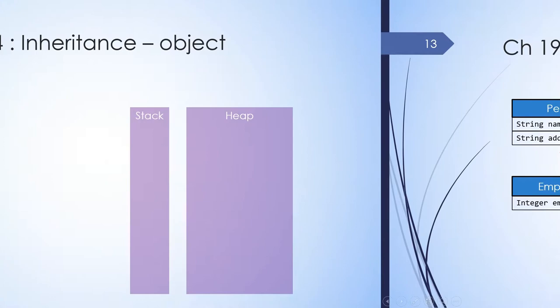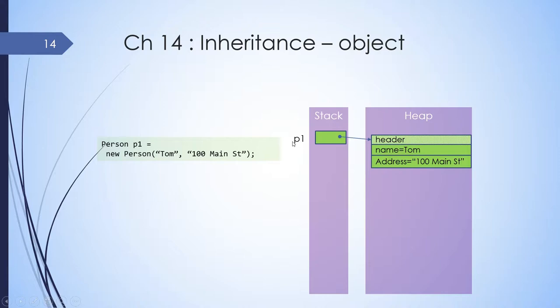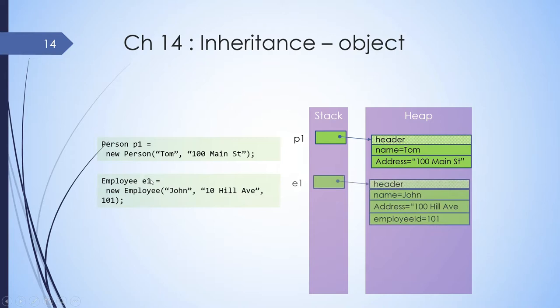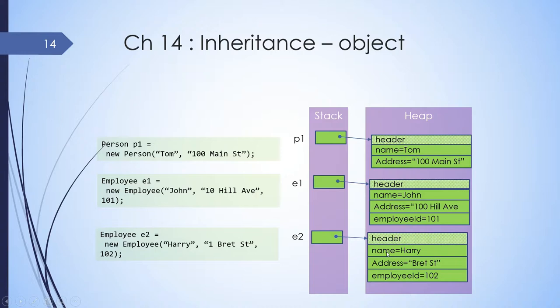Let's take a look at how the memory allocation for a derived or subclass looks like. When creating an object of Person, it allocates space for name and address; this object is created in the heap and the address is stored in variable P1 of type Person. When creating an instance of Employee, it allocates space for name and address — though they were declared in the superclass — and the address is stored in E1 of type Employee. The key point is that an object of a subclass will have space allocated for all the members of its superclass.